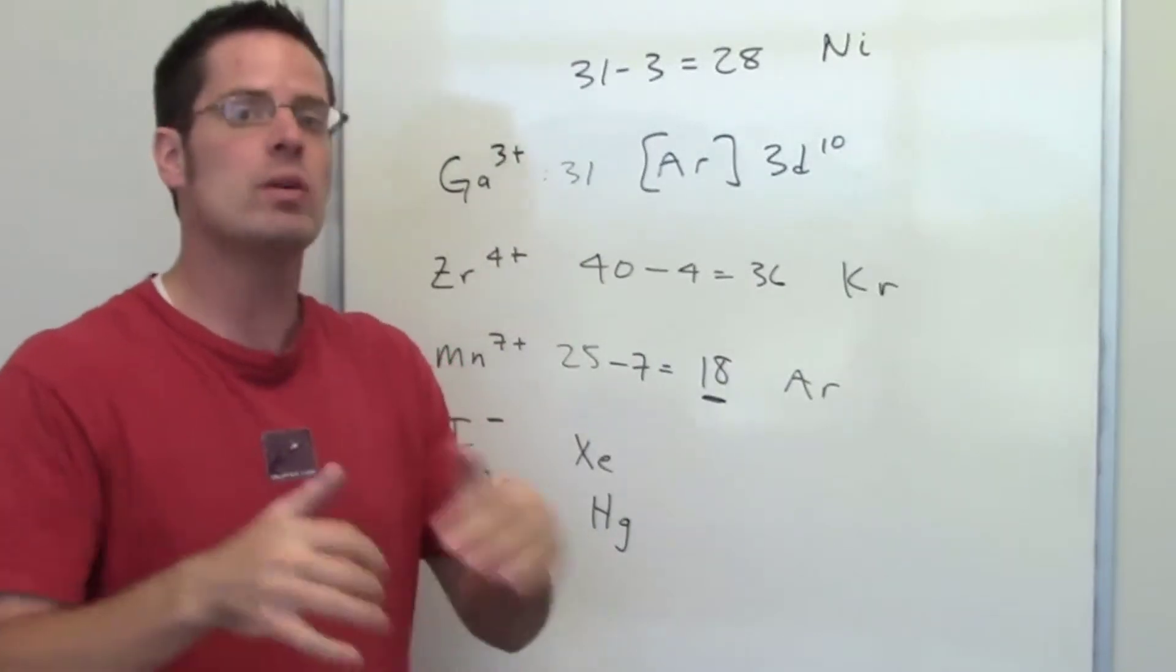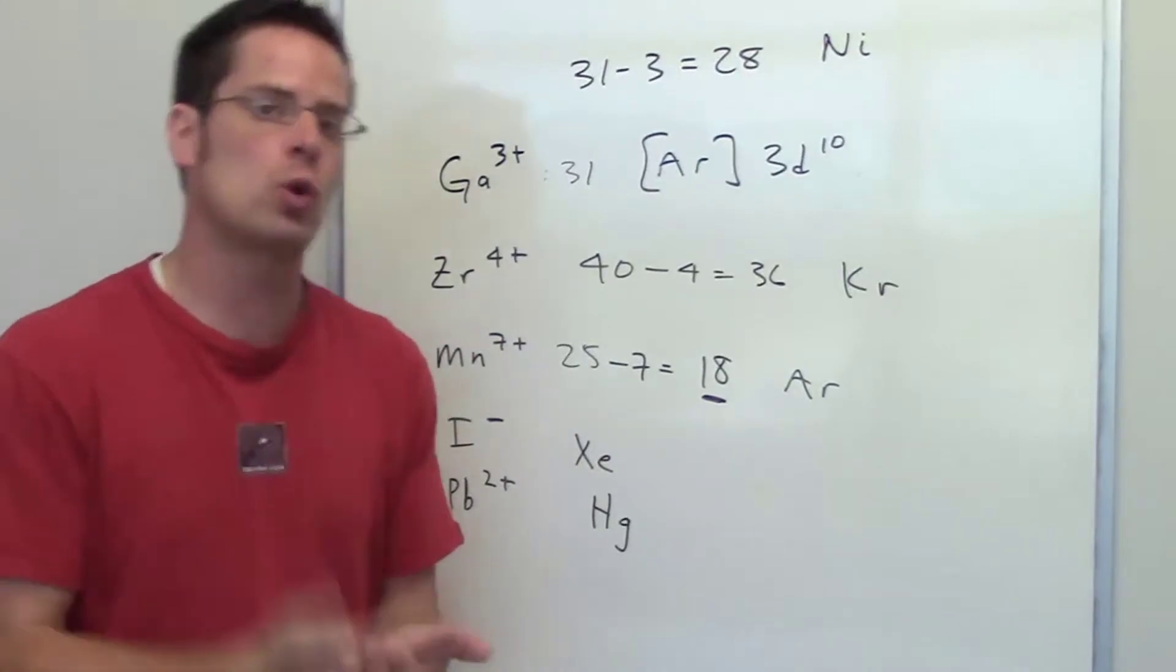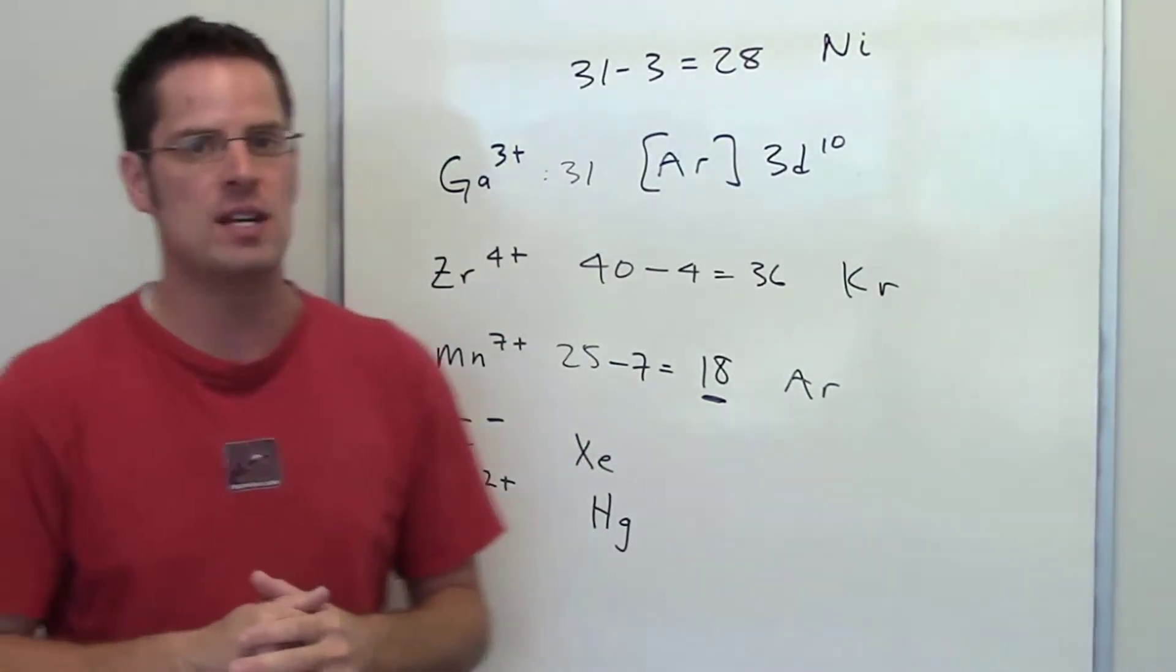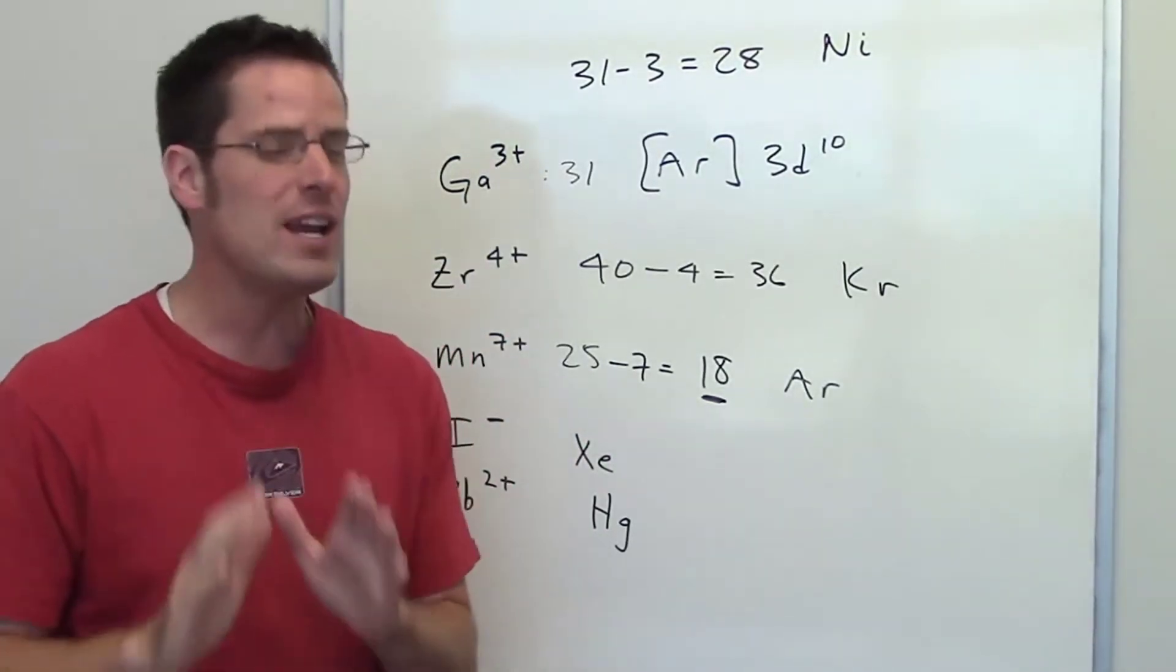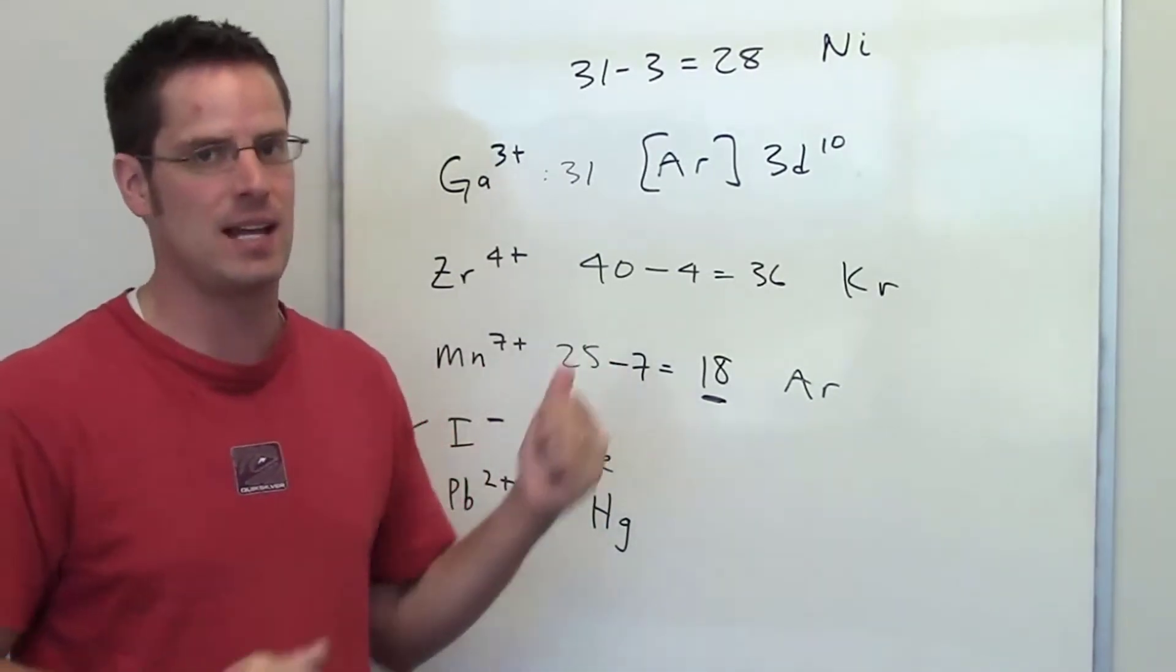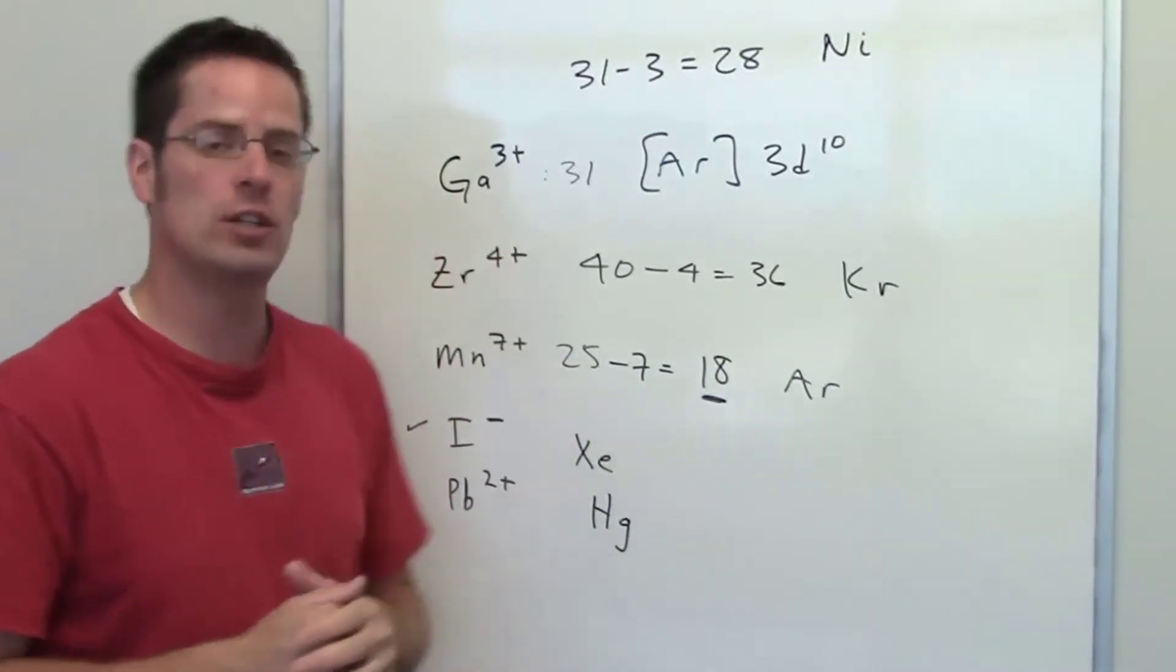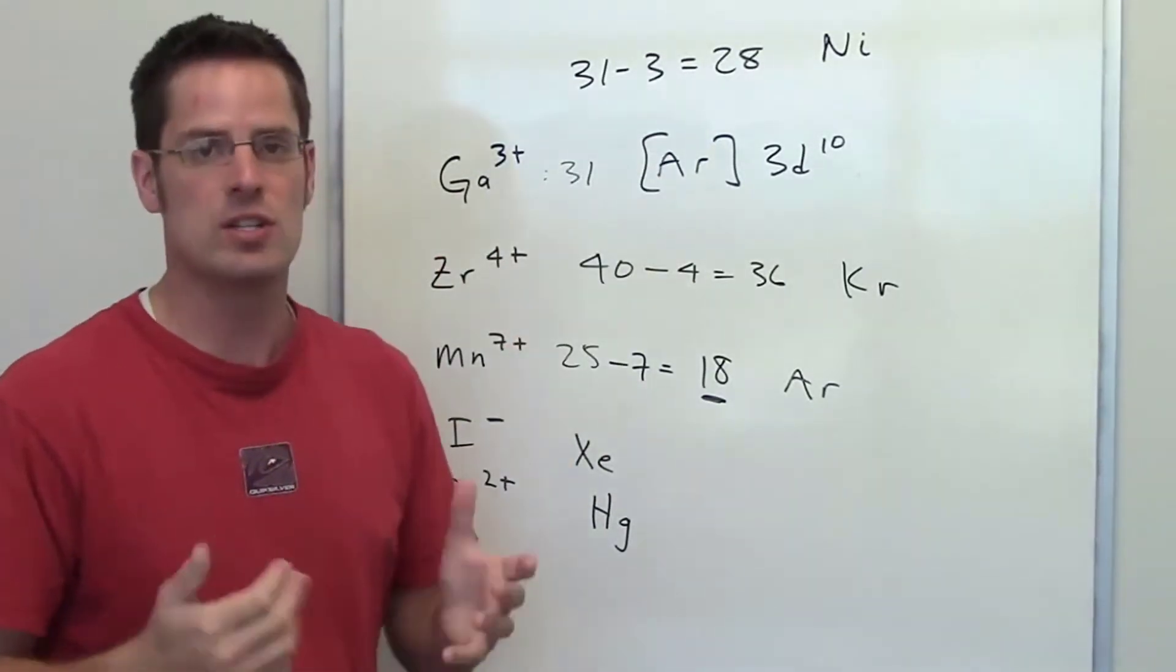However, that's not what the question is asking. It's asking what neutral element is isoelectronic with gallium 3+. That term, isoelectronic, really only means what element has the same number of electrons as gallium 3+, not the same electron configuration. Therefore, the correct answer to this question is element 28, which is nickel.